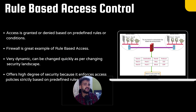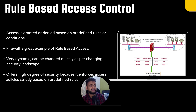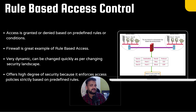Rule-based access control is very dynamic and can change quickly based on the changing environment. It offers a high degree of security by enforcing access policies strictly based on predefined rules. However, it is not very flexible — you can't keep stacking rules on top of rules indefinitely. It works well for things like firewalls and systems, but you can't set rules for people the same way. RBAC is better for user-related access control, while rule-based works better for systems and devices.